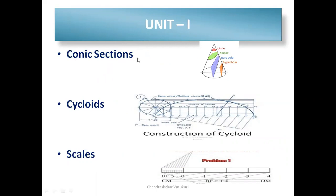The first unit consists of 3 categories: conic sections, cycloidal curves, and scales. Under conic sections, we have ellipse, parabola, and hyperbola, covered through different methods including the eccentricity method. We have put together all 15 methods, and you need to practice all of them — any one of which could be asked in the exam.